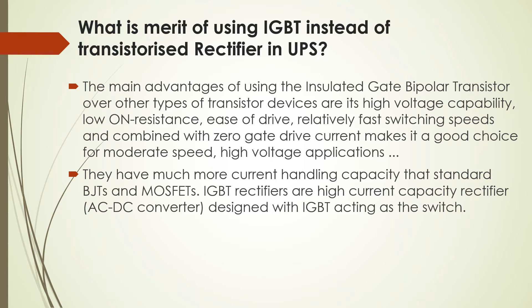What is the merit of using IGBT instead of a transistorized rectifier in UPS? The main advantages of using the IGBT — Insulated Gate Bipolar Transistor — or other types of transistor devices are its high voltage capability, low on-resistance, ease of drive, relatively fast switching speeds, and combined with zero gate drive current, it makes a good choice for moderate speed, high voltage applications. They have much more current handling capacities than standard BJTs or MOSFETs. IGBT rectifiers are high current capacity rectifiers designed with IGBT acting as a switch.